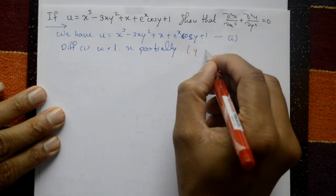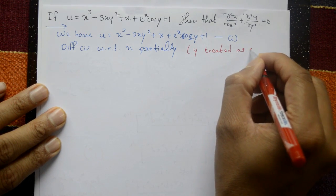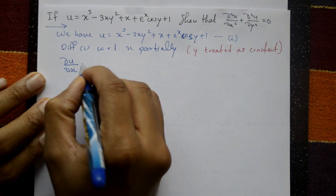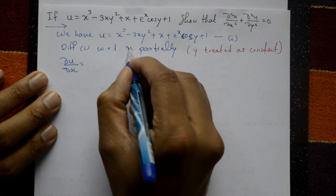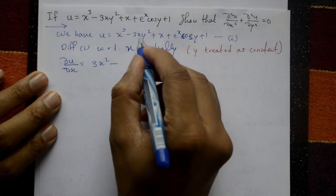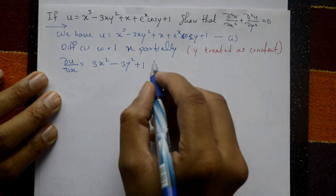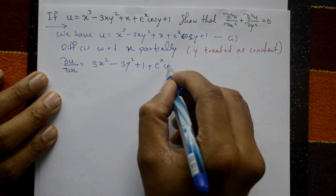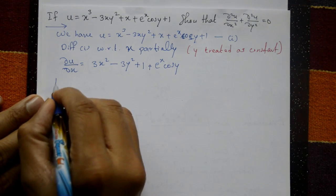y is treated as constant. ∂u/∂x = 3x² minus 3y² (constant as it is) plus 1 plus e raised to x, since differentiating eˣ gives eˣ, and cos y is a constant as it is.